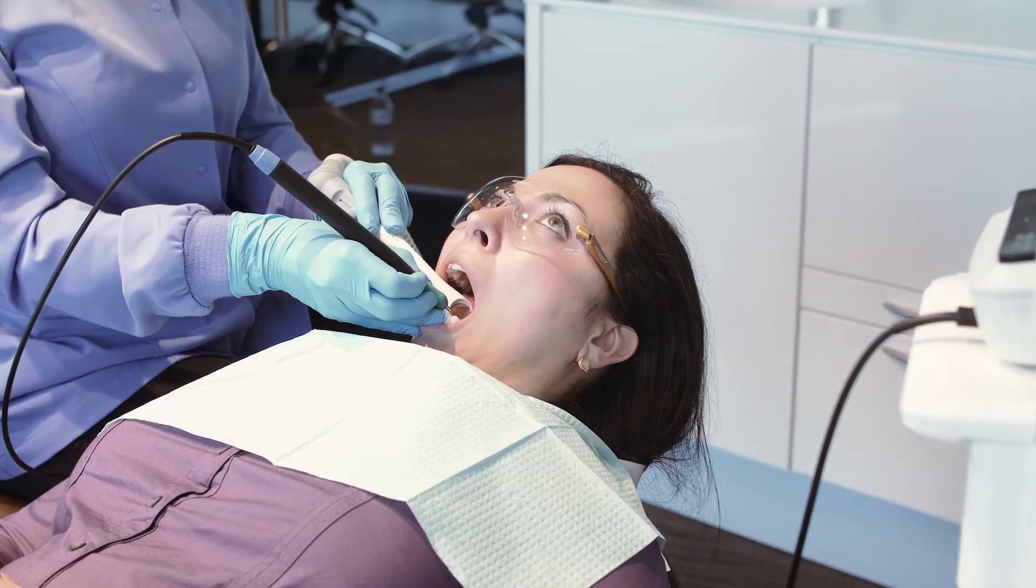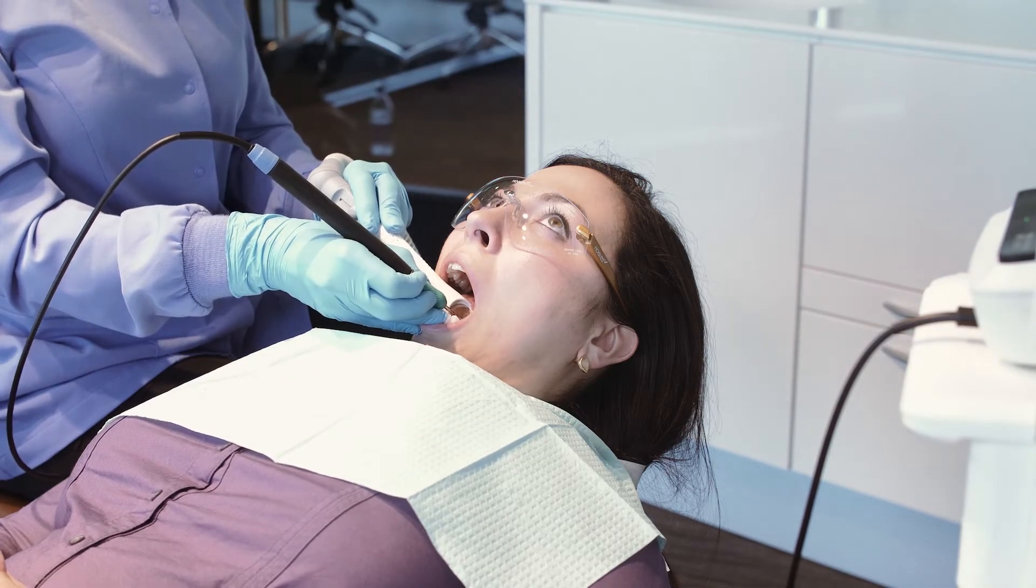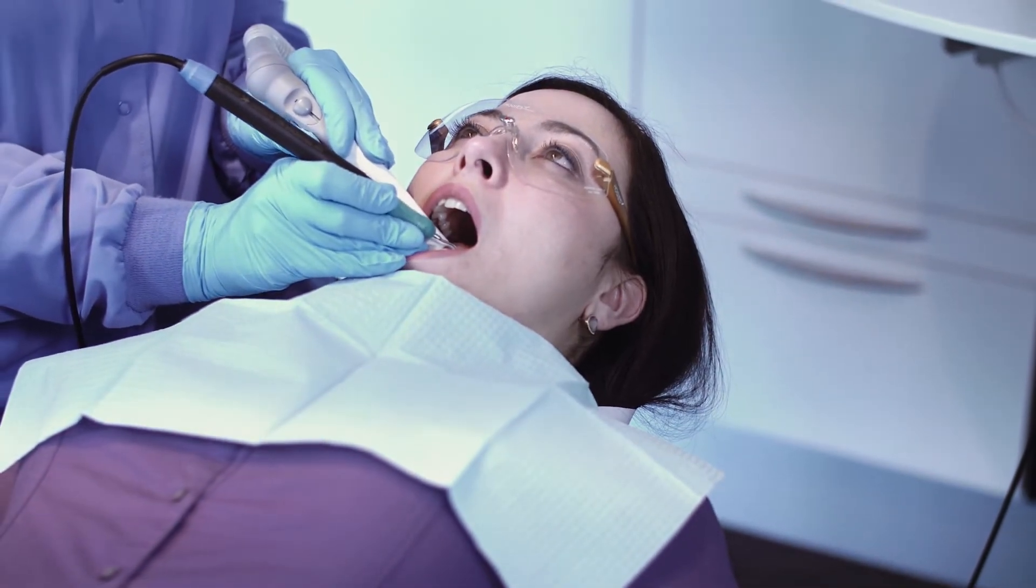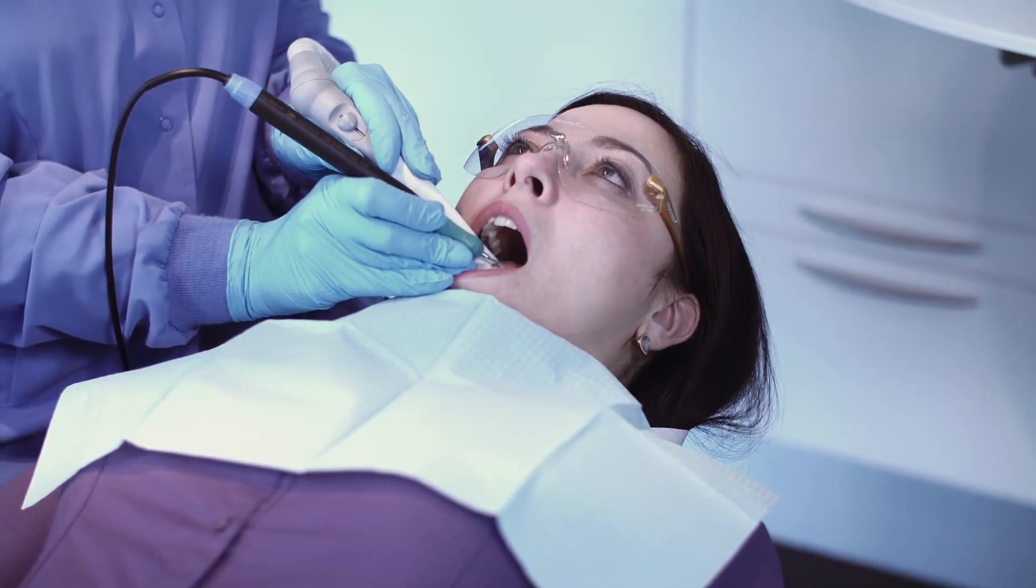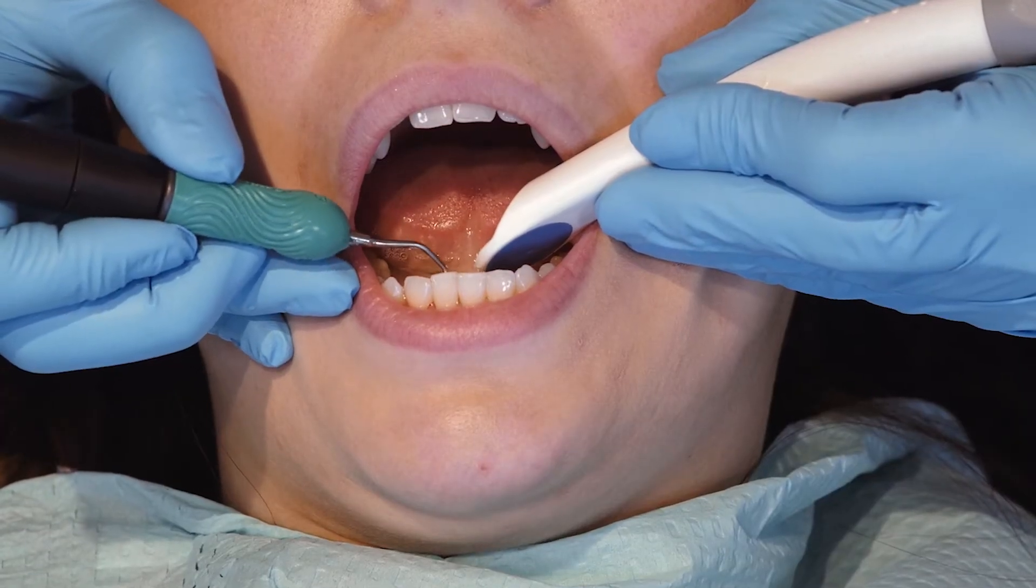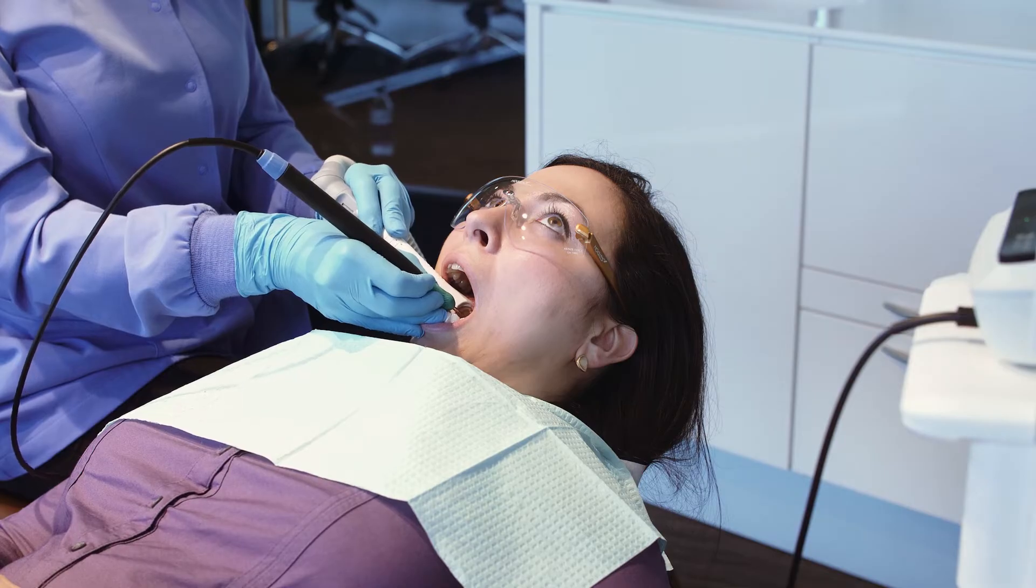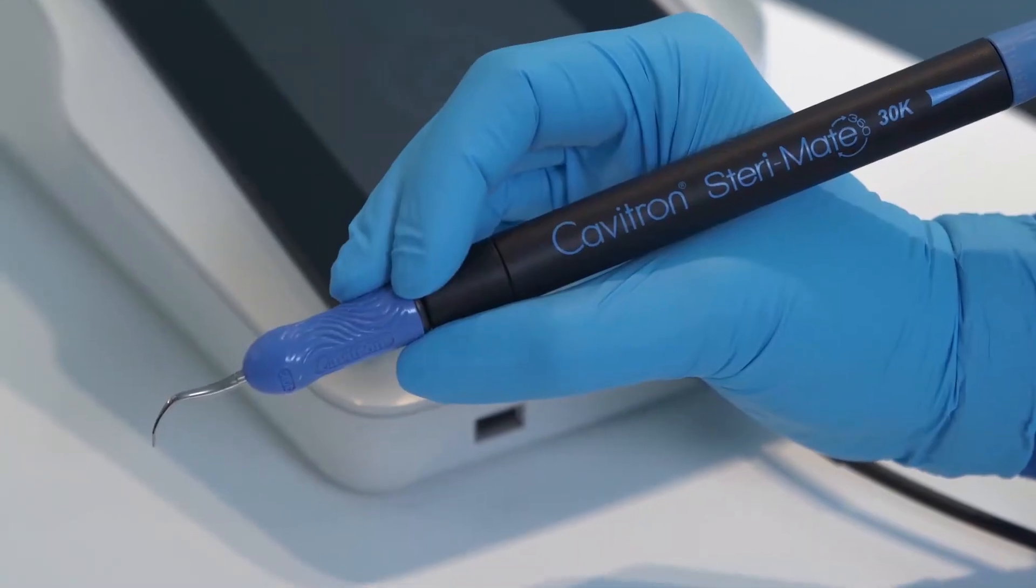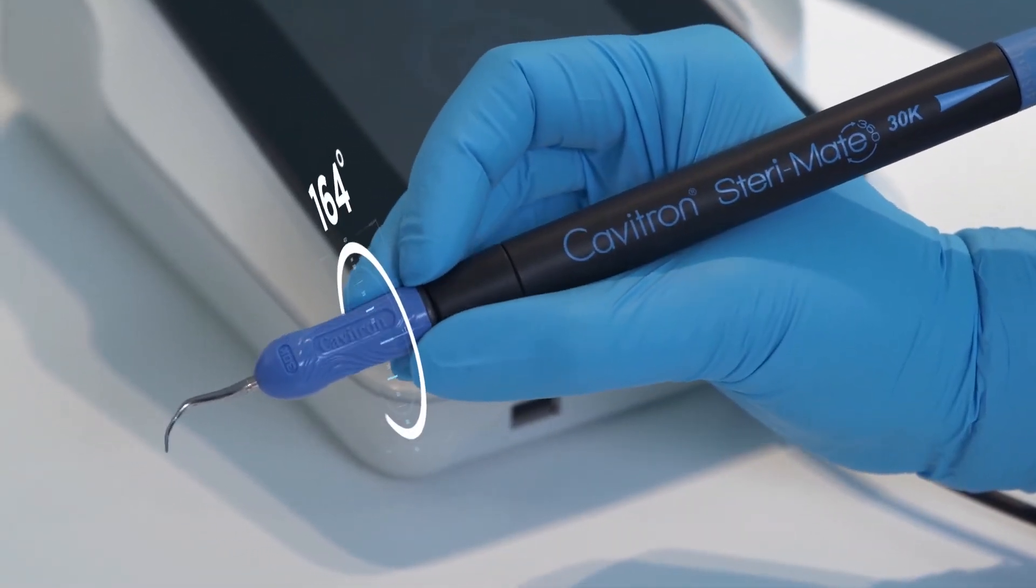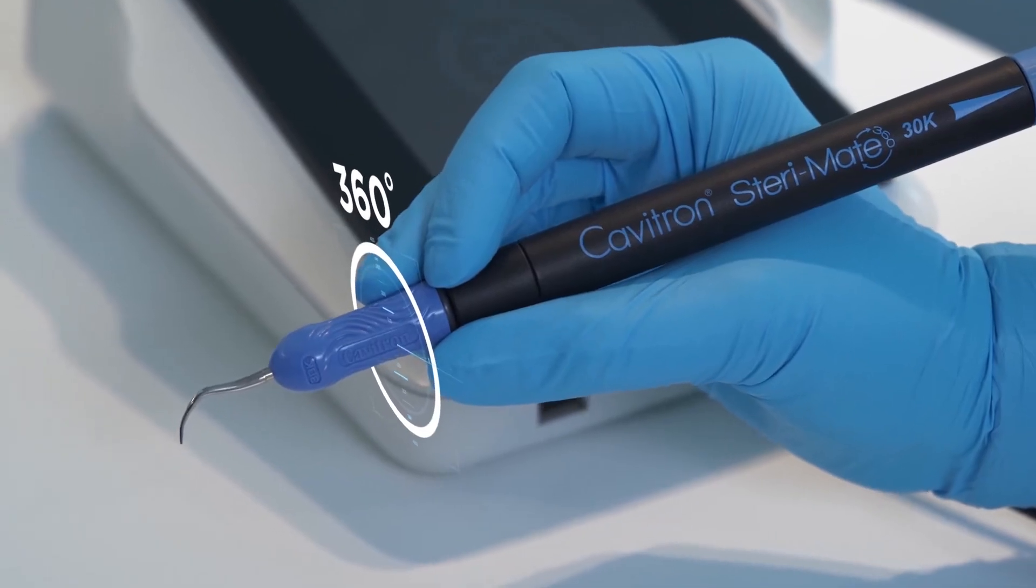The Steramate 360 handpiece provides the clinician the effortless rotation of the ultrasonic insert with their fingertips. This allows adjustable hand positioning, free-flowing movement, and easy access within the anterior and the posterior of the oral cavity. To rotate the ultrasonic insert, place fingers on the nose of the handpiece and rotate to your desired position.